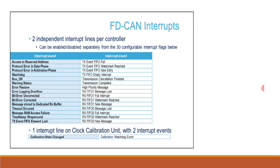There is one interrupt line for the clock calibration unit. The complete list of possible interrupt events includes: access to reserved address, protocol error in data phase, protocol error in arbitration phase, watchdog, bus-off, warning status, error passive, error logging overflow, bit error corrected, bit error uncorrected, message stored to dedicated RX buffers, timeout occurred, message RAM access failure, timestamp wraparound, TX event FIFO element, calibration state changed, and calibration watchdog event.